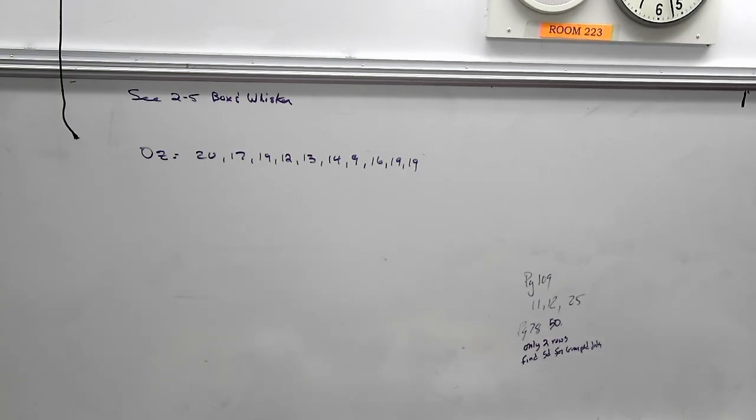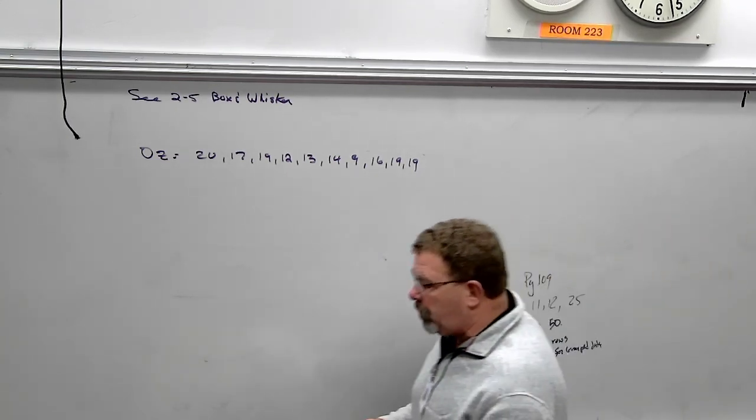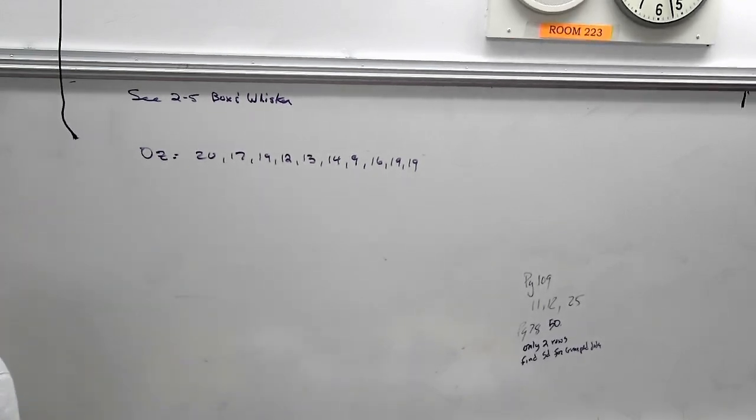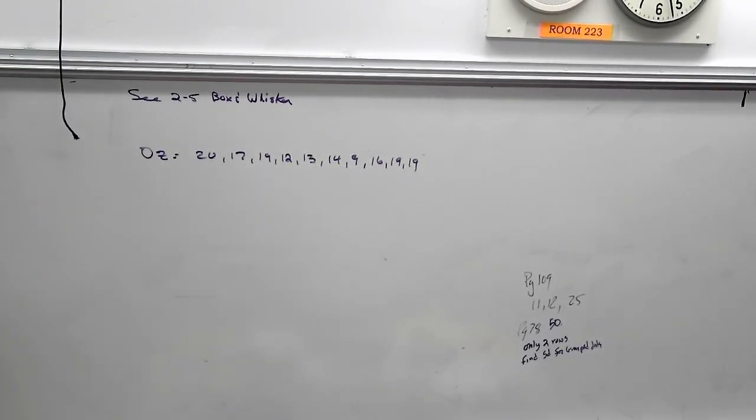And here's what I do. So most people, when they do box and whisker plots, they just do the same thing every time. They draw the box, they do this, they put a dot, and they put a dot. And then they'll just say, oh, this is 2, this is 10, this is 22, this is 24, and this is 25. And then I will take off minus 5 out of 6 points because it means nothing.